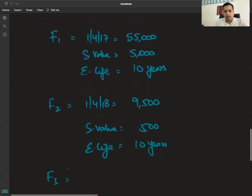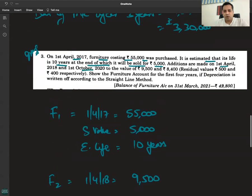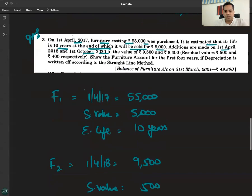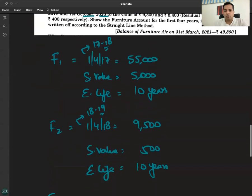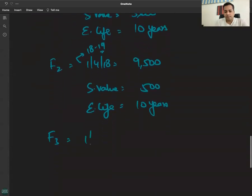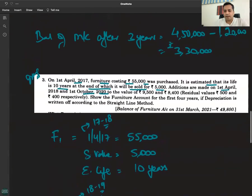F3 on 1st October 2020. Additions are made on 1st April 2018 and 1st October 2020. 1st April 17, 17-18, 1st April 18, 18-19, and then 1st October 2020, which will come in 2021. It was purchased for 8,400 and scrap value is 400.